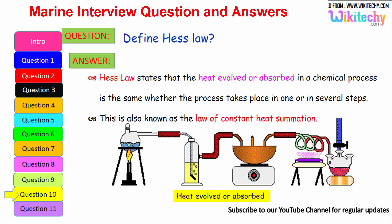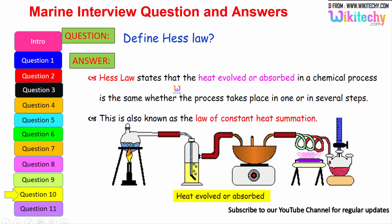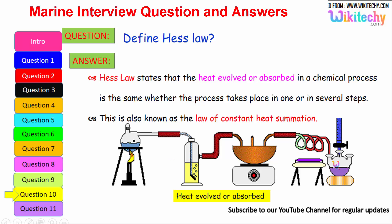Define Hess's Law. This is one of the very important questions. In the case of generating heat between objects and emissions, Hess's Law states that the heat evolved or absorbed in a chemical process is the same whether the process takes place in one or in several stages. This is also known as the law of constant heat summation.